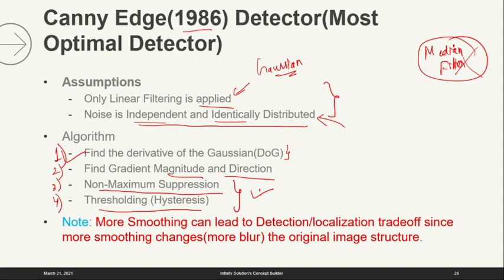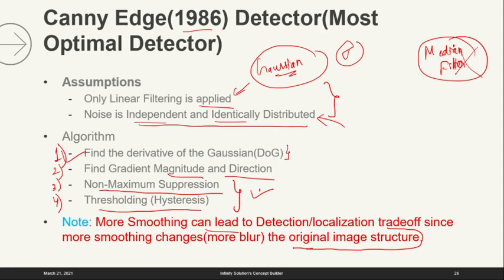Because of more smoothing, if our original image is more blurred — higher sigma means more blurring — our original image structure will change, and then our edge detection algorithm won't be able to perfectly localize where the edge is. So there is always a tradeoff between edge detection and localization. How much we have to smooth — what value of sigma to choose — we will see the effect of sigma. I will show you an example in this lecture or the very next lecture.